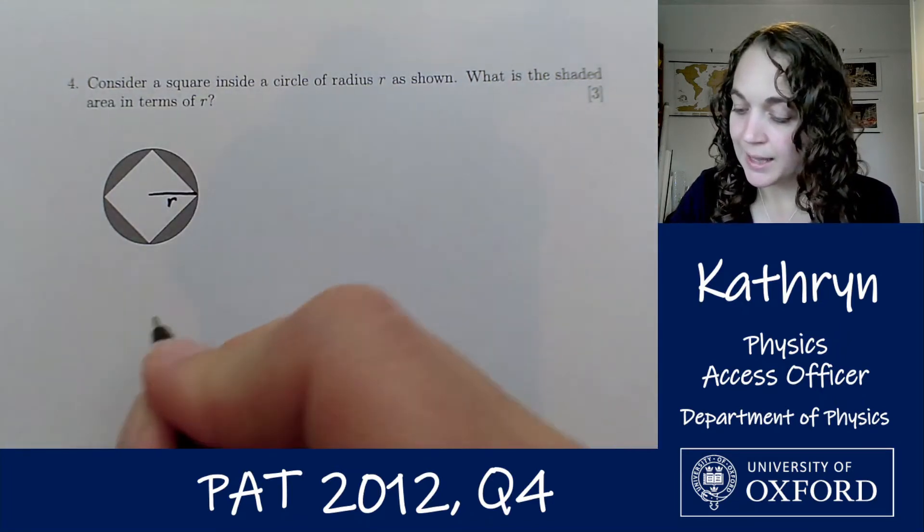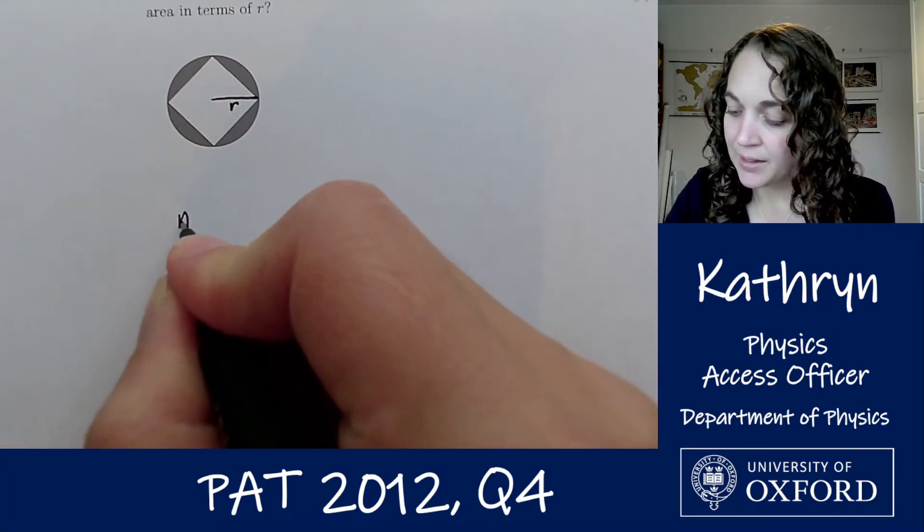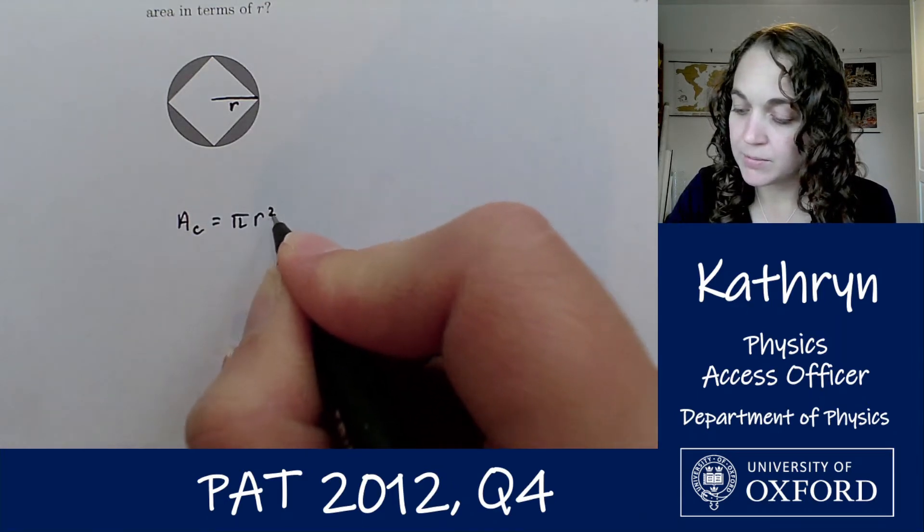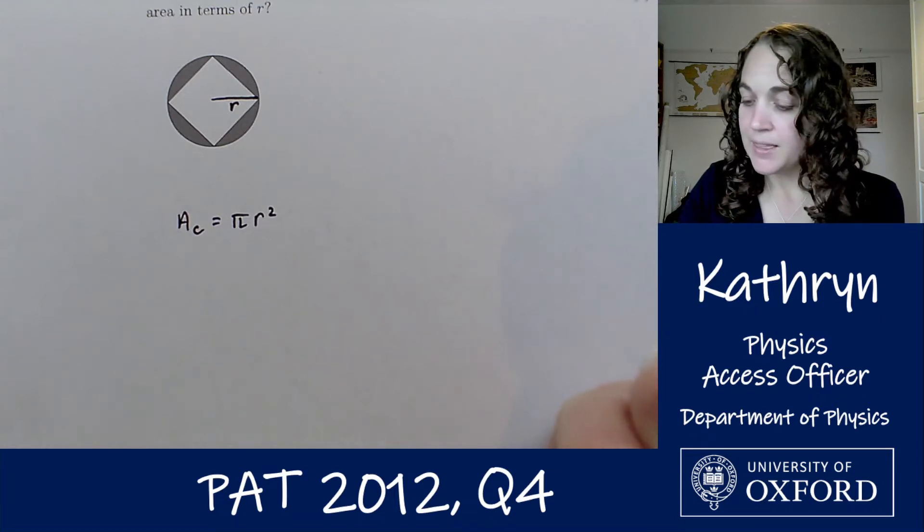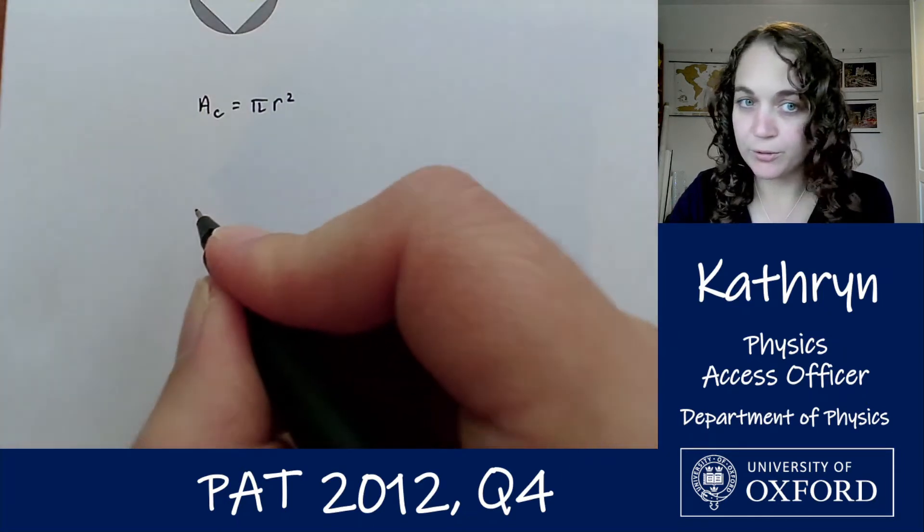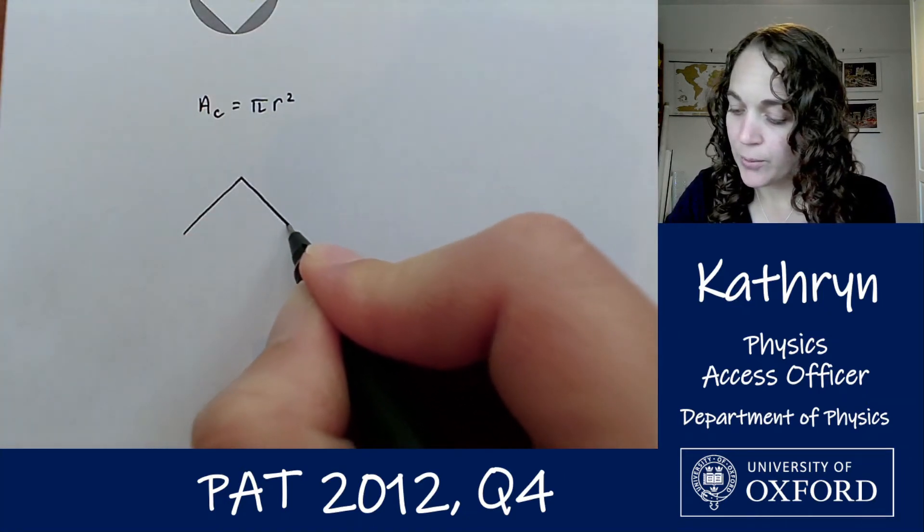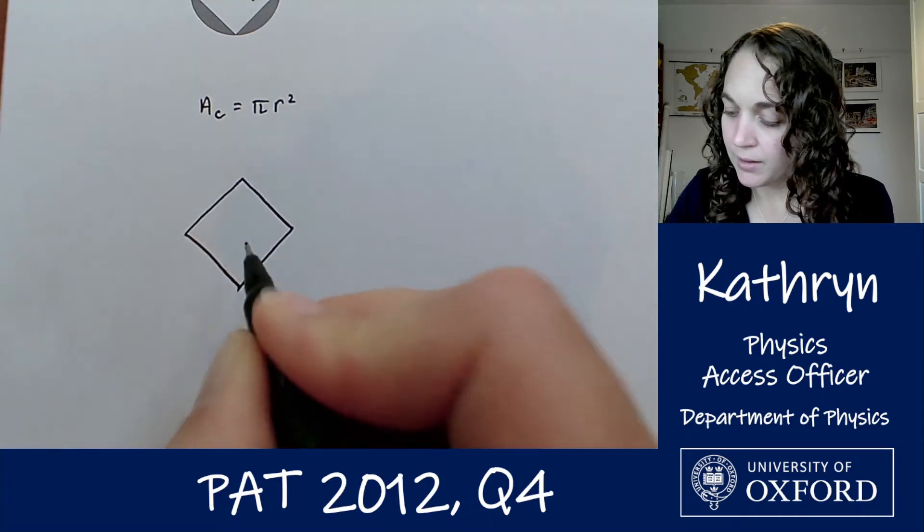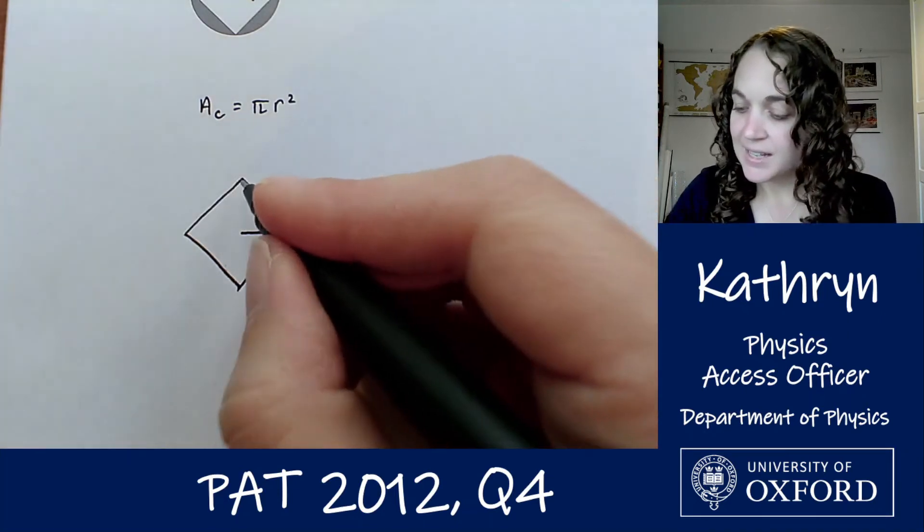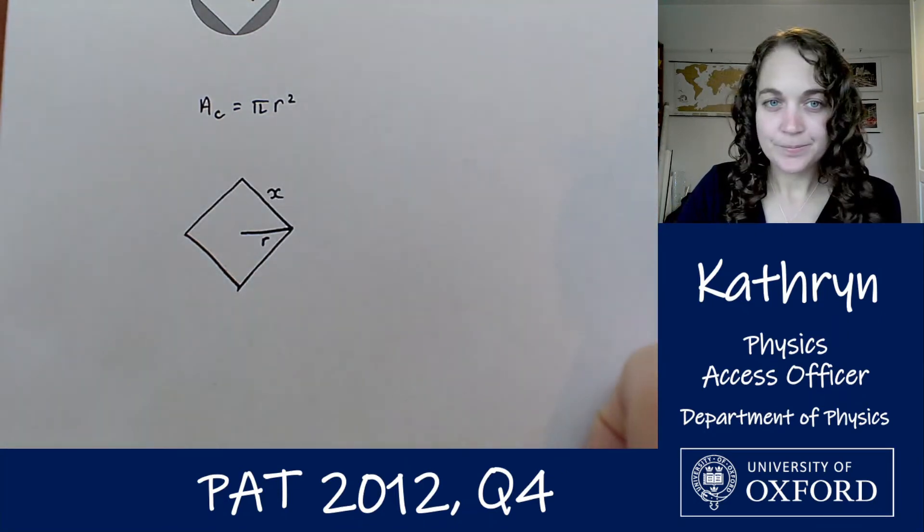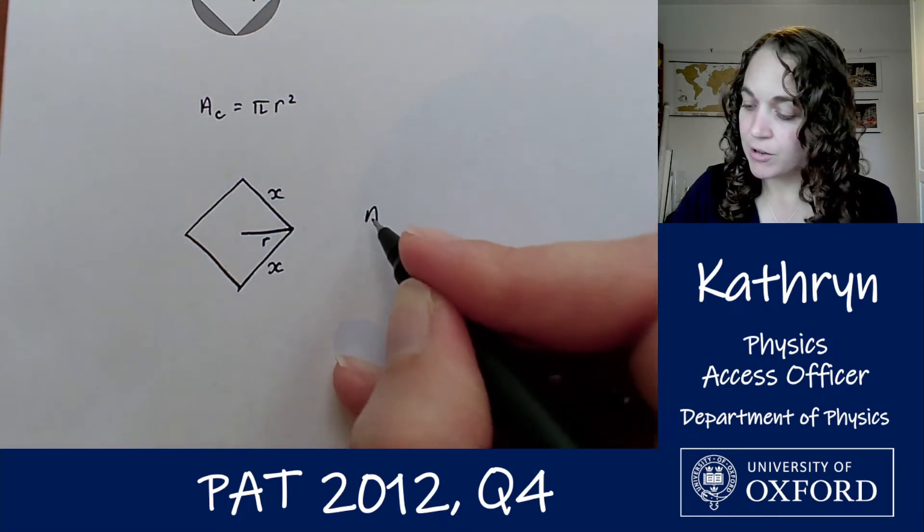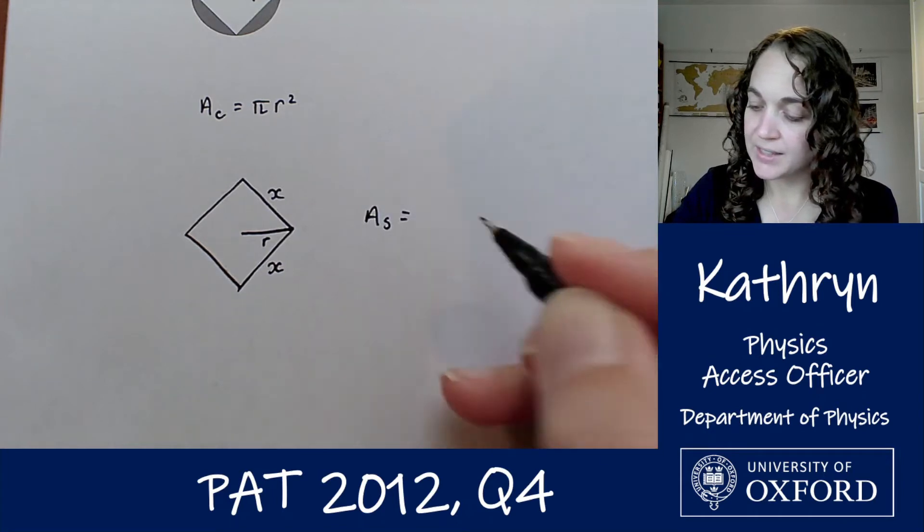The area of the circle is going to be pi r squared. Straightforward enough. Then let's think about this square. We've got a square with this distance here is r and let's call this side length x. So if that side is x, obviously this is a square, then the area of the square is going to be x squared.